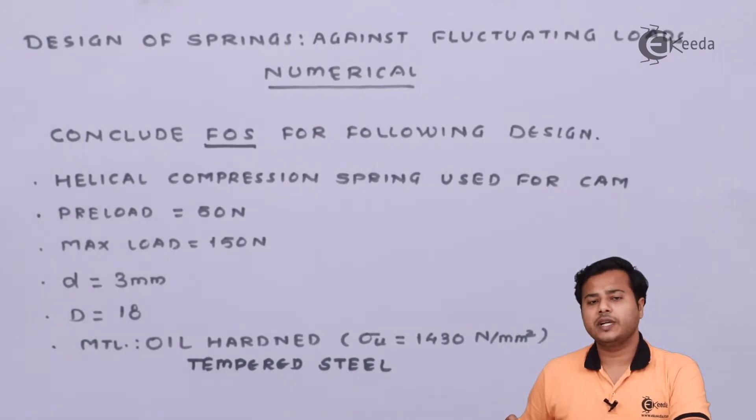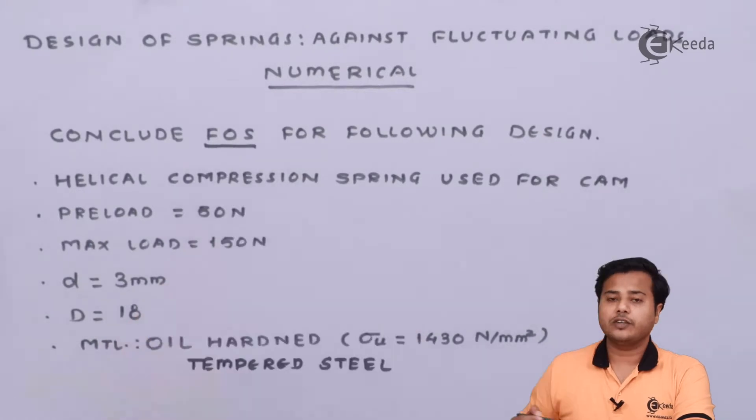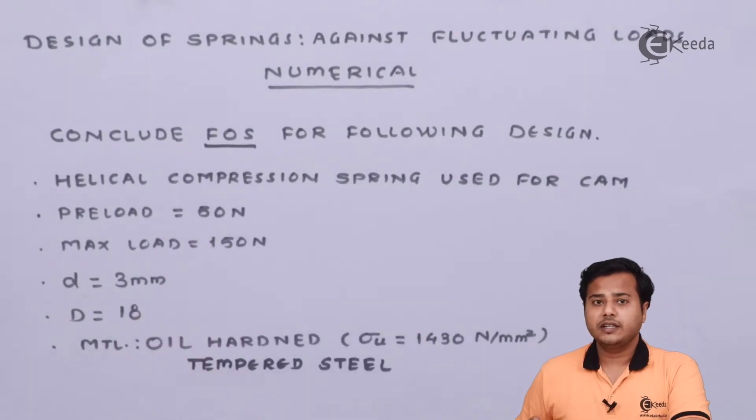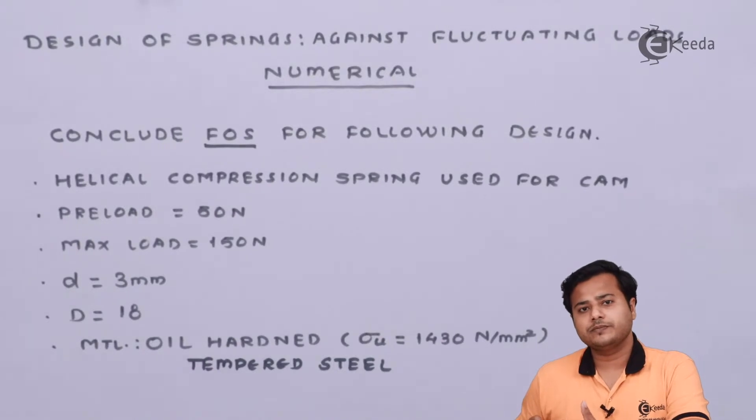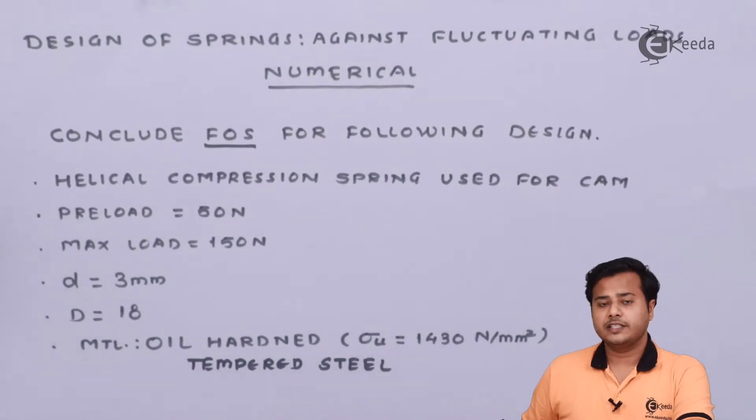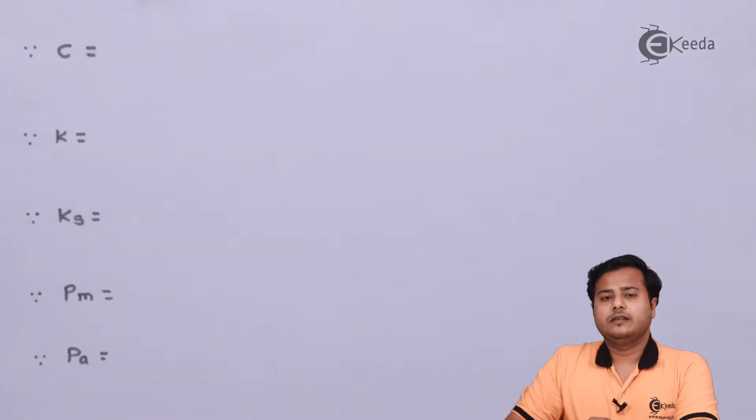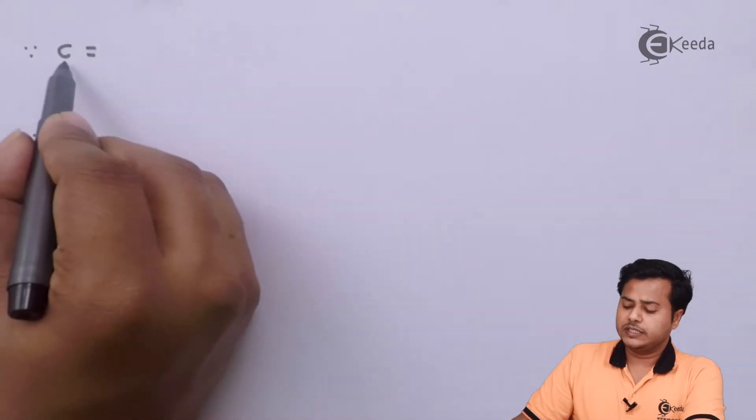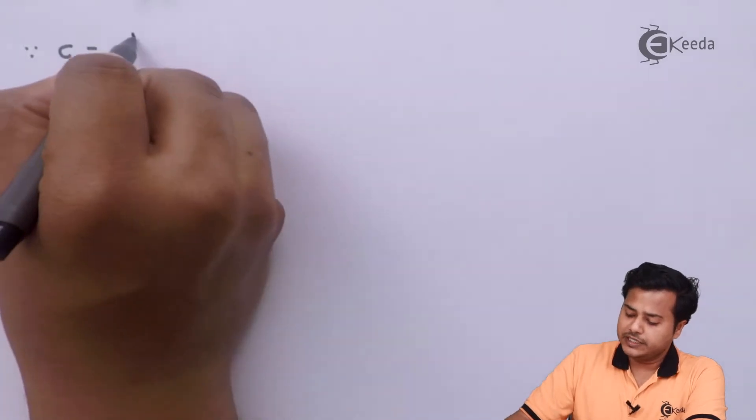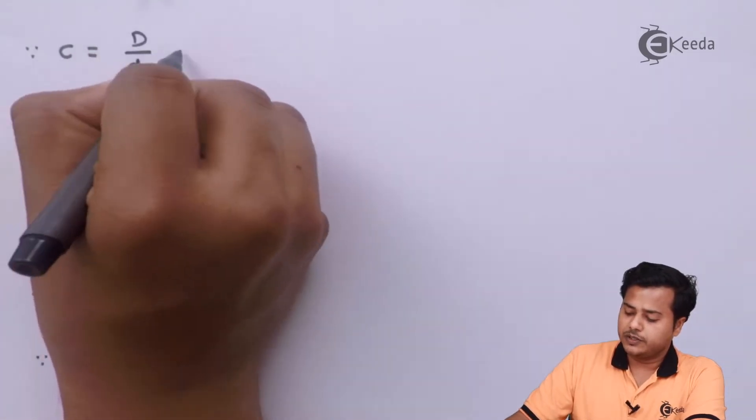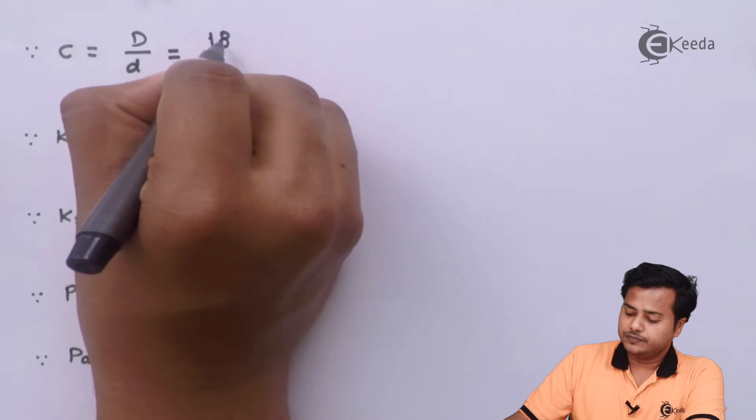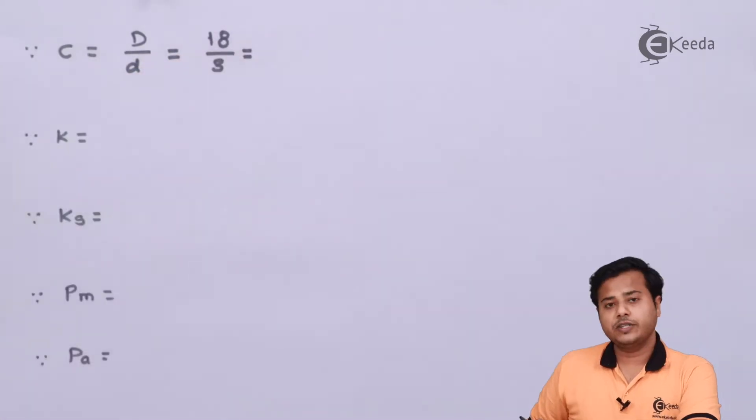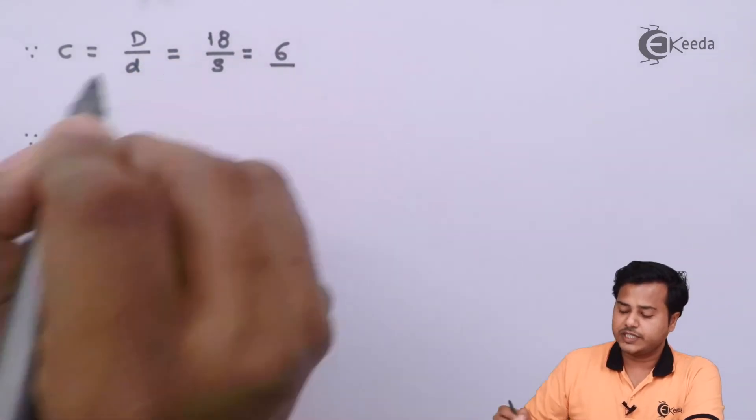So with this data, let us move ahead and find out the required factor of safety. Because whenever the factor of safety is mentioned in the problem of springs with all such loadings, it is a problem of fluctuating loads. So let us start with some of the factors which are very well known to us. This is the spring index and we know that it is given by this particular relation. After substituting the given values, we get that spring index is equal to 6.